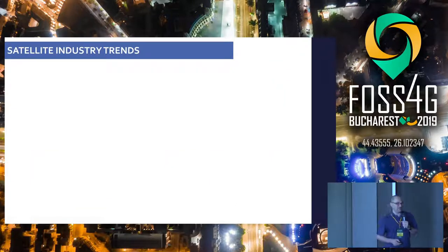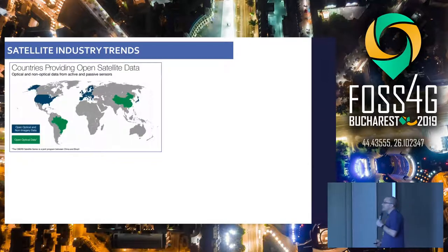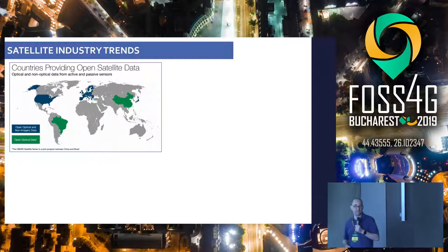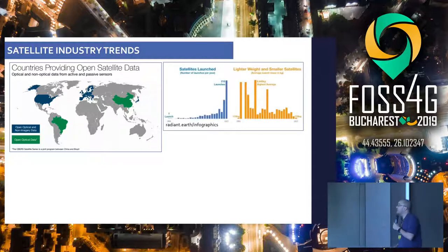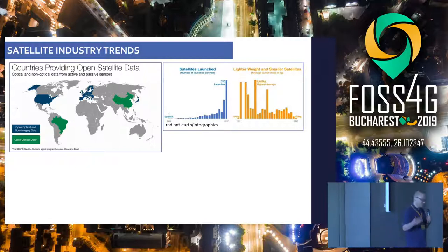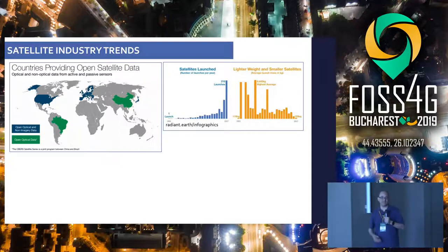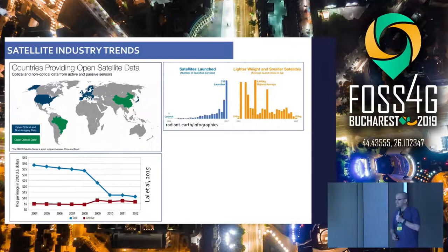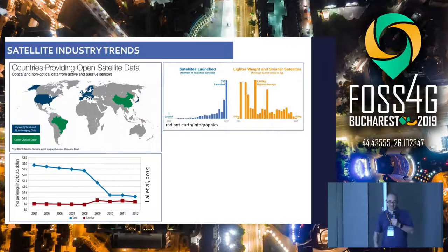There are four trends in the satellite industry. First, more countries are providing open satellite data made publicly available to researchers, academics, governments, and cities to improve city resilience and planning. Second, more satellites are being launched — they are becoming smaller and less expensive, enabling higher-resolution data collection from every location on Earth. Third, the price of satellite data is decreasing, allowing more accessibility to these datasets.